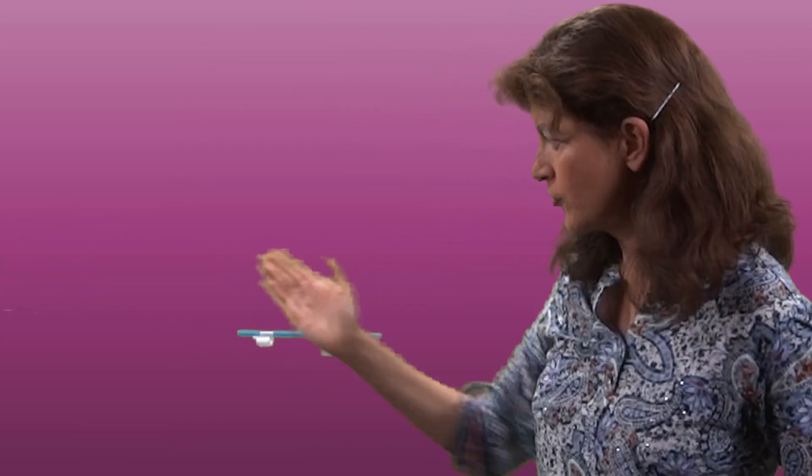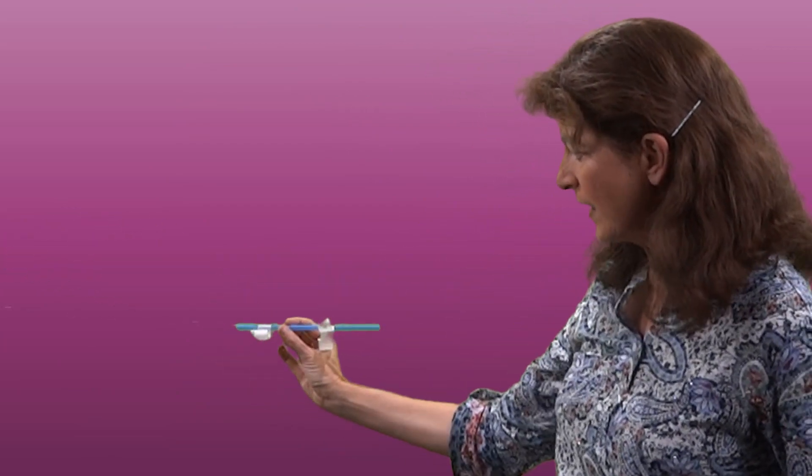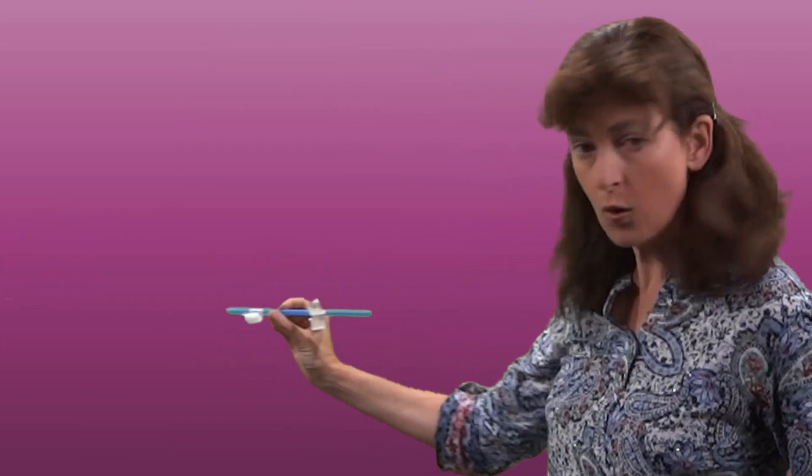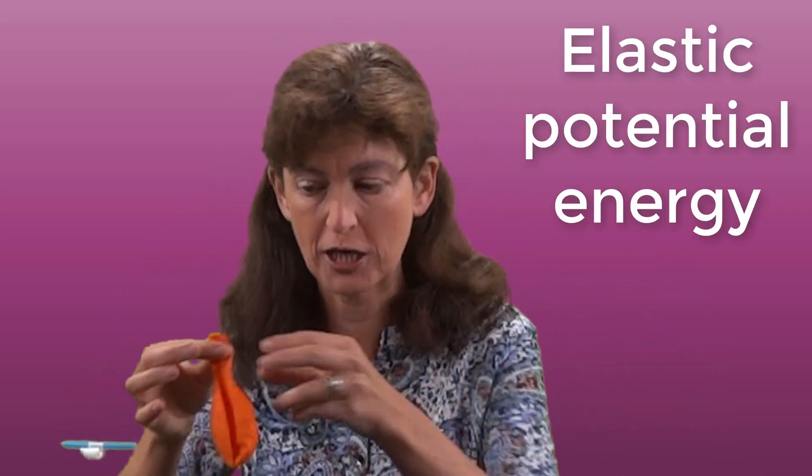You can see here we have a string that's held taut, and then I've put a straw through that, and here I've got some sticky tape all ready to take the balloon. When I blow the balloon up, I give the balloon energy, and that energy gets stored in the balloon in the form of elastic potential energy.